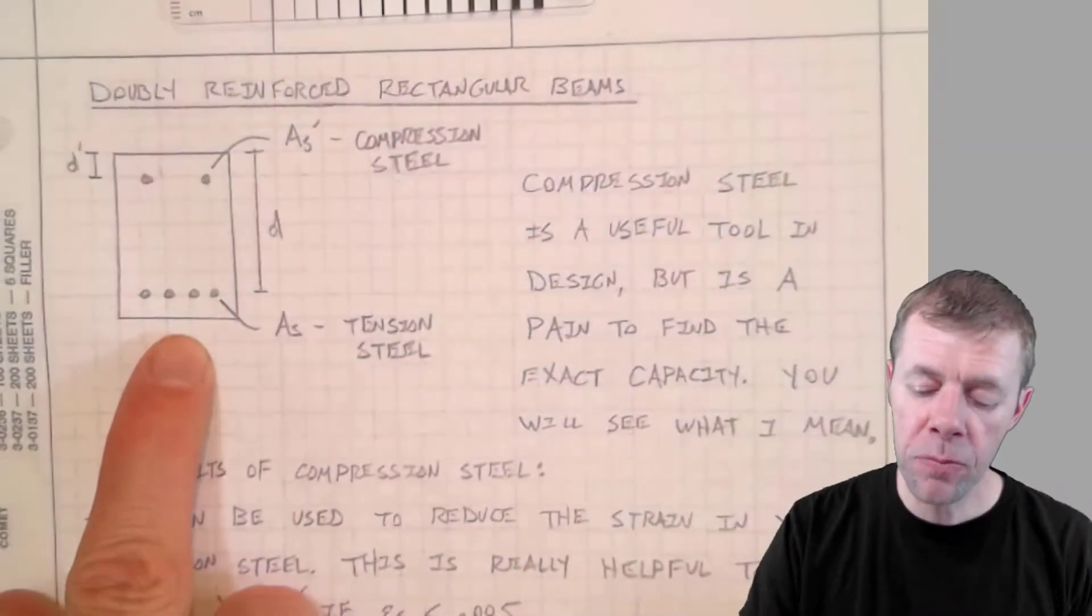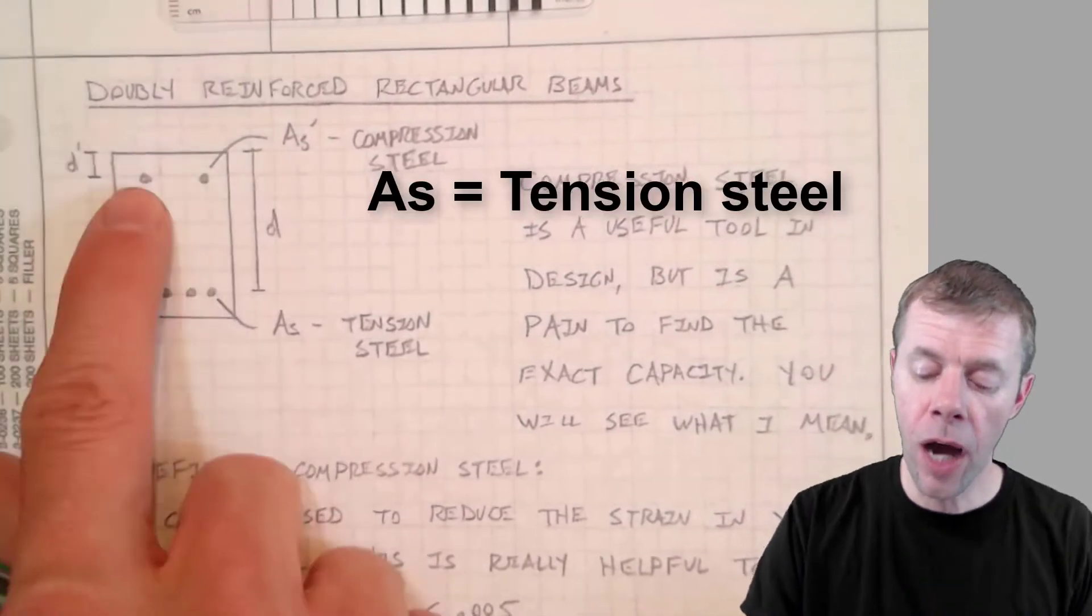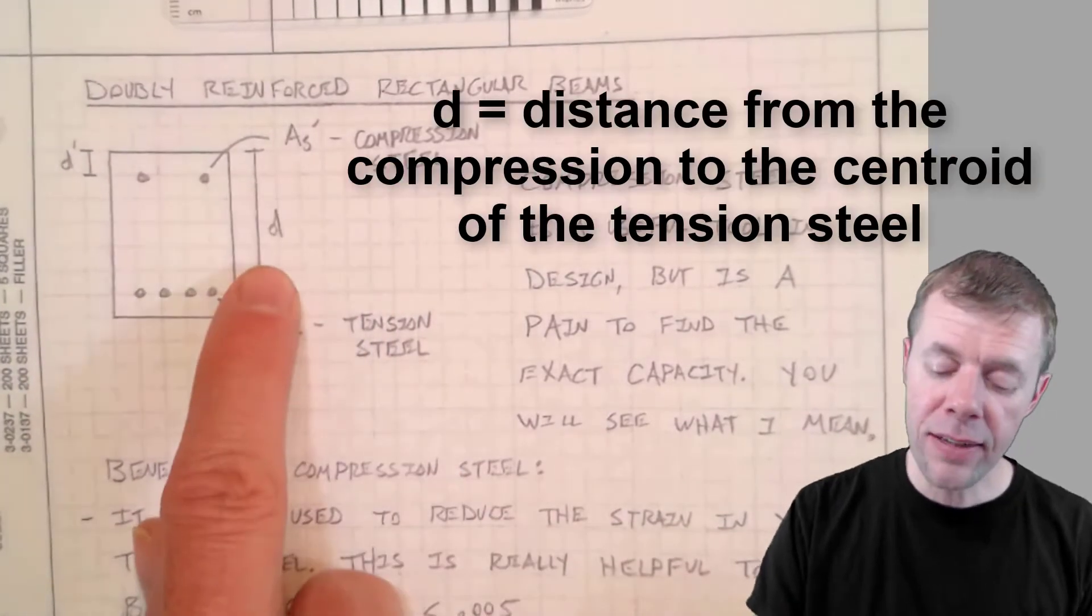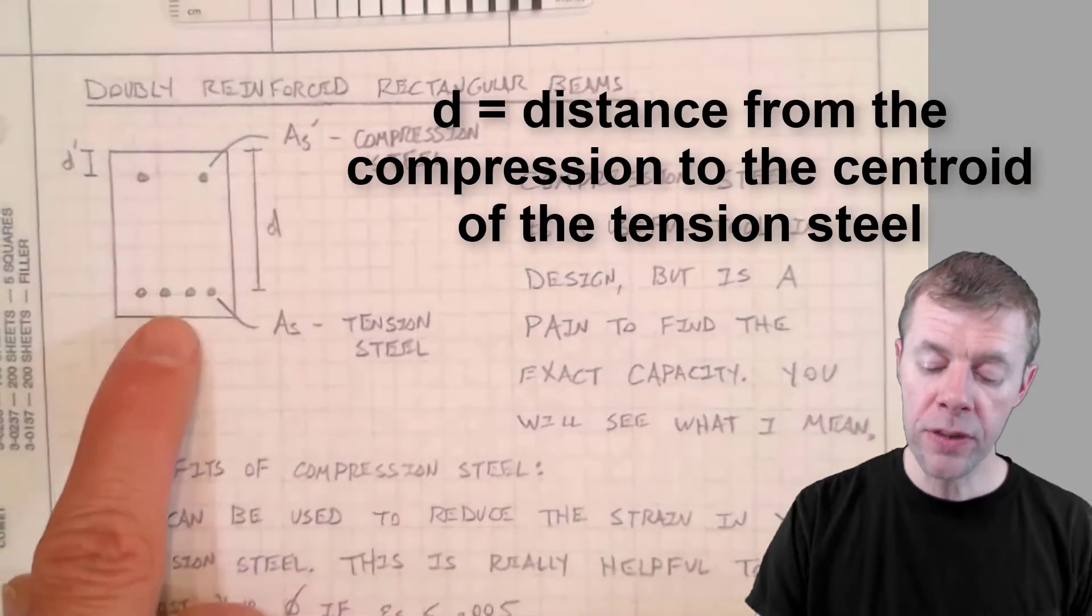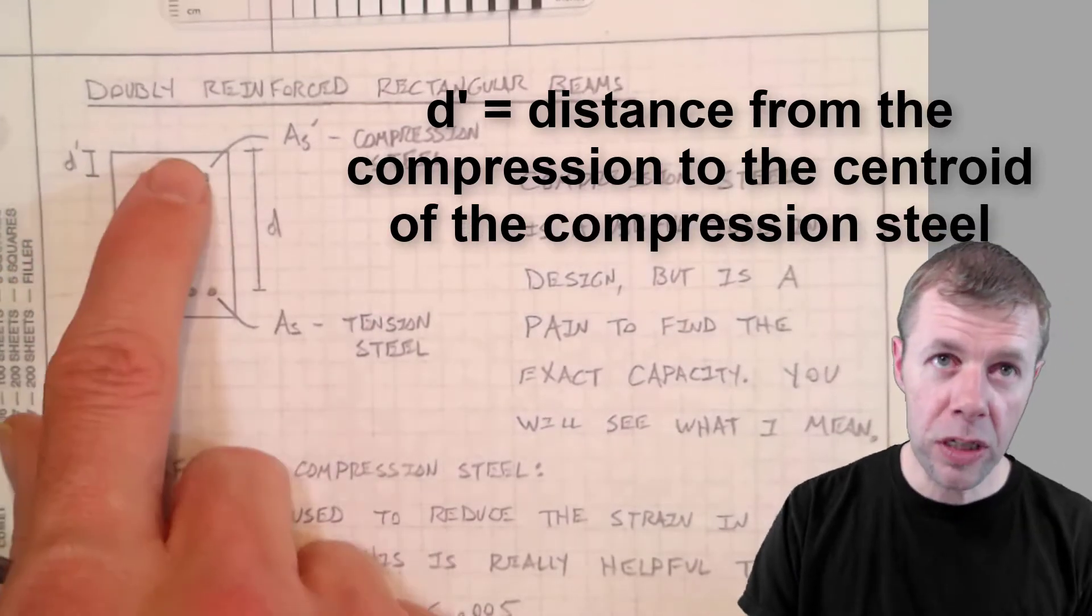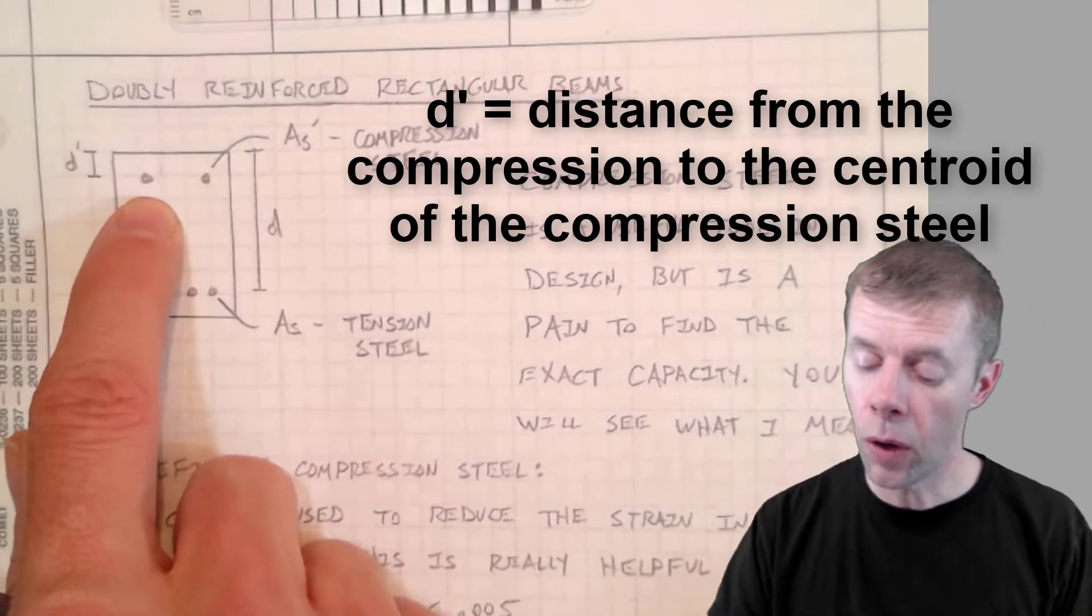If we have a beam like this, we've got some steel on the bottom, and that's the tension steel. That's AS. The steel on the top is the compression steel. We call that AS prime. D, that's the distance from the compression fiber to the centroid of the tension steel, and D prime is the distance from the compression fiber to the centroid of the compression steel.